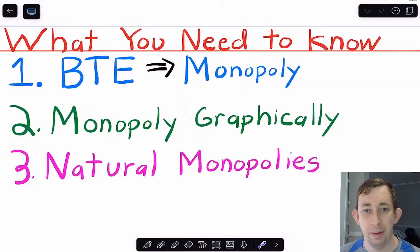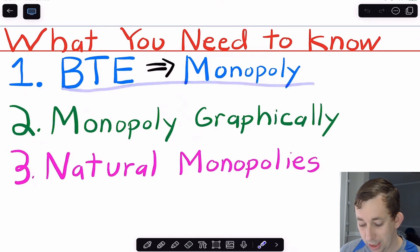Here are the three things you need to know for the AP Micro Exam about the monopoly market. You need to know that monopoly appears because there's barriers to entry, so one firm is able to get in and prevent any other firm from entering the market, so there's only one firm in monopoly market.